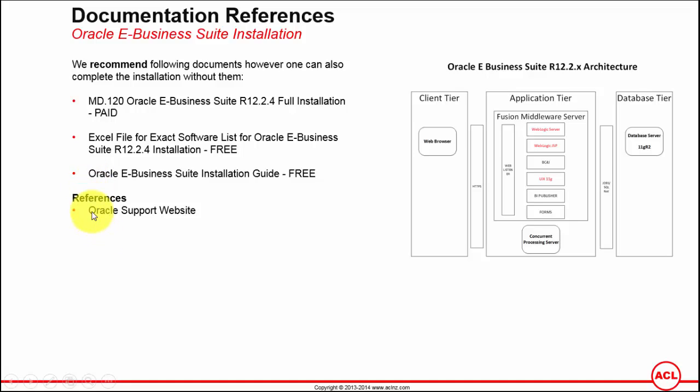The last one is the Oracle Support website, which is support.oracle.com. Using that you can refer to a number of documents in relation to the installation of Oracle E-Business Suite. However, you must have something called a Customer Support Identifier, or CSI number, in order to access the Oracle Support website.